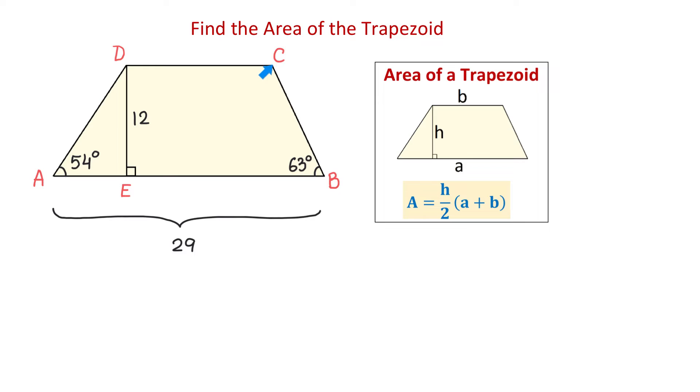Now, from point C, we will draw another perpendicular to the base, and let this point be point F. Then, here to the right, the triangle B, F, C is another right triangle. In the middle, we have a rectangle formed, and the upper base, D, C, has the same length as the line segment E, F.